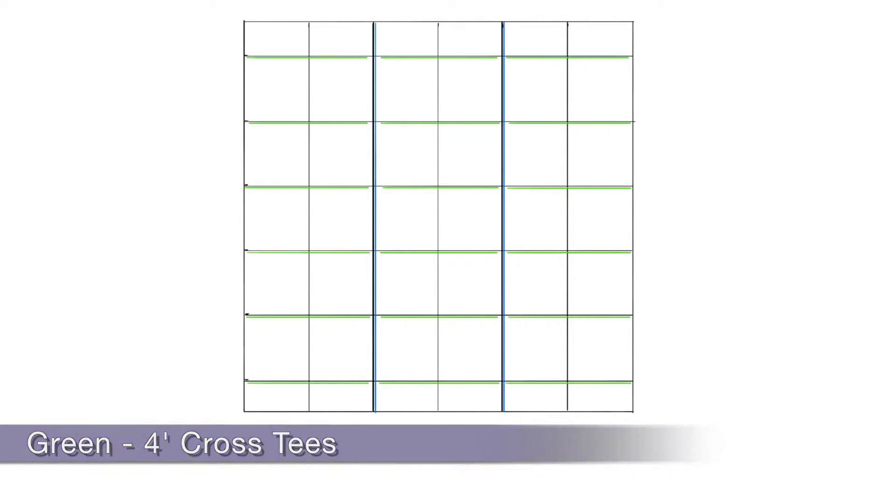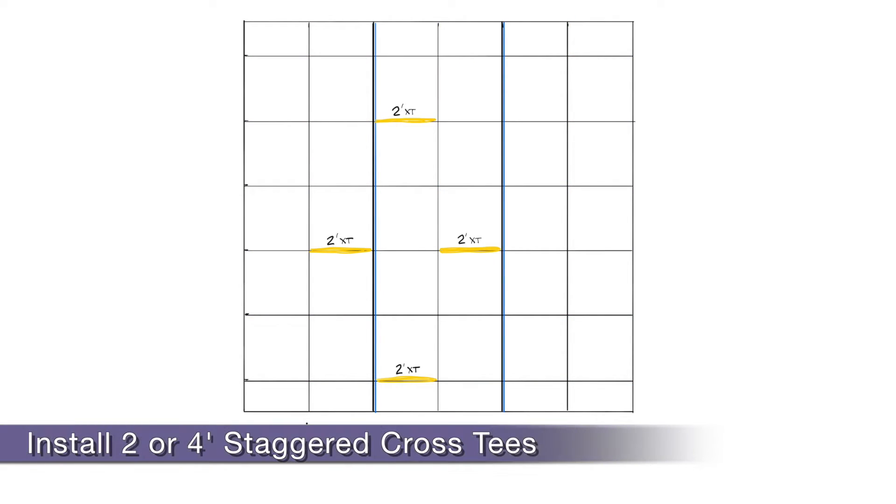Let's take a look at layouts and installation. These blue lines represent main runners four feet on center, while the green lines are four foot cross T's and the orange lines are two foot cross T's. Two foot LED T-Bars can be staggered. Four foot T-Bars are also available.